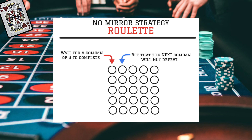Look at the results of red or black and wait for a column of five to complete. You are going to keep track of this with a pen and paper or your phone. Let's say the first column of five goes red, red, black, red, black — we are going to bet that the next column will not repeat. In other words, one of these bets will be off; it will not mirror the first column. That is what we are betting on.